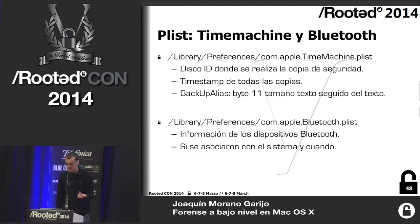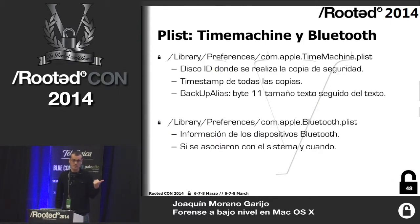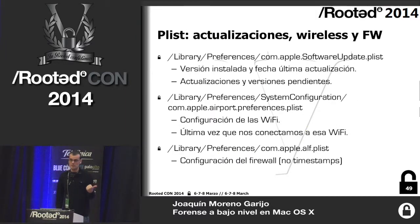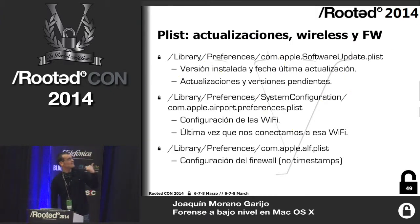Time Machine and Bluetooth both have historical data available. The system always keeps the last login time. Important note: Plist files work on COCOA time (epoch 2001). If you use libraries that do the parsing and the value is 0, they will give you back January 1st, 2001. The backup alias is a binary structure where byte 11 includes the size of the text being read — that is the name given to the hard drive in Time Machine. Also: updates store the list of system updates. Wireless/WiFi Plists tell us the last time we connected to each network, but not the password — the password is in a different channel.